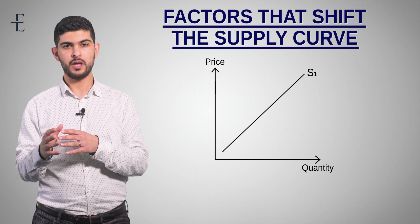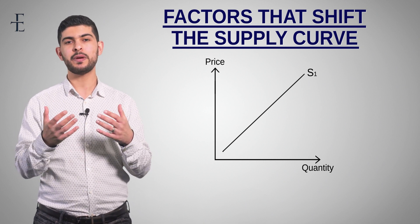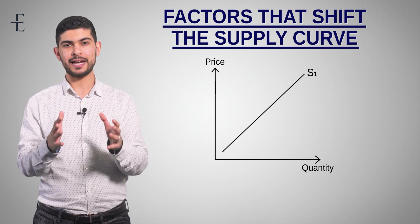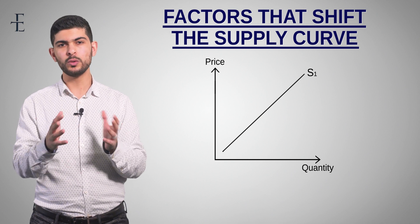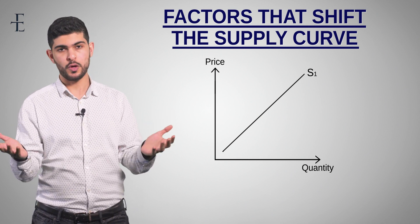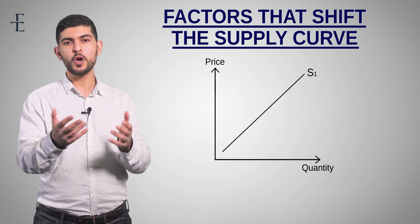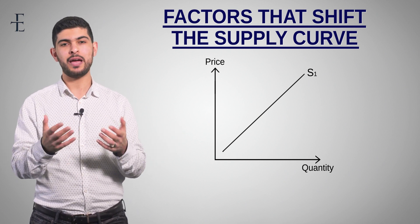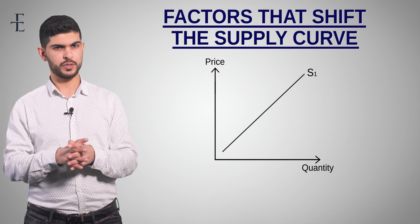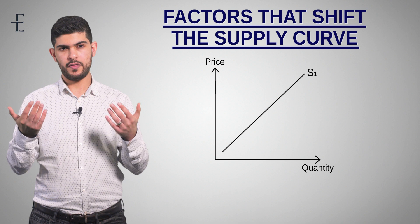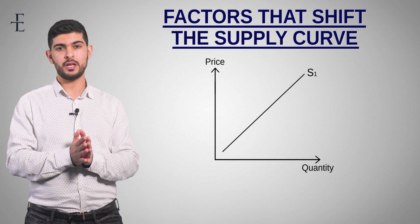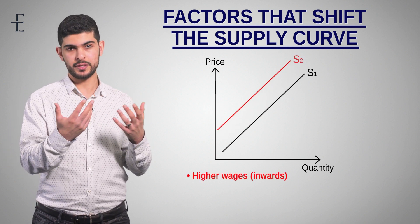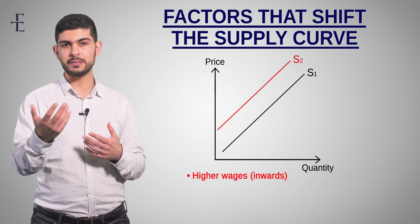What are the factors that shift the supply curve? One of the most important things to remember is that from the perspective of a producer, one of the major factors affecting their supply is their costs. Anything that alters their costs is going to shift supply. For example, let's say your workers all go on strike and as a result you end up having to pay them a higher wage. Your costs are higher, therefore you cannot afford to hire as many workers. Supply would shift inwards to the left because now you can't supply as many units as before.